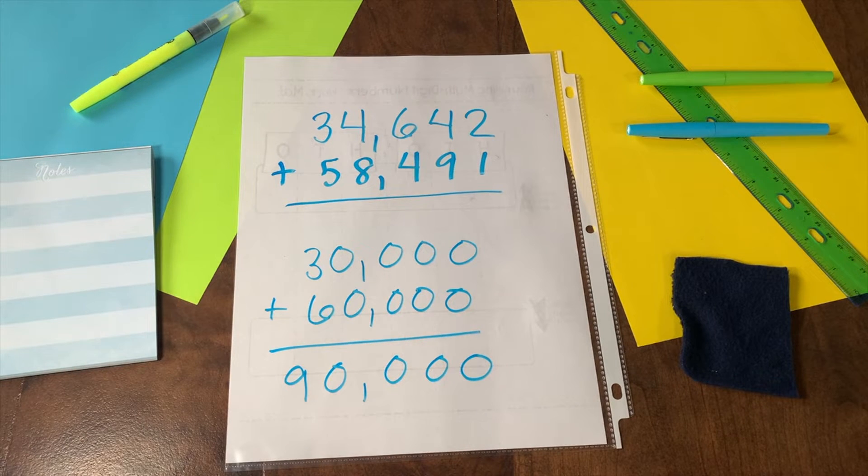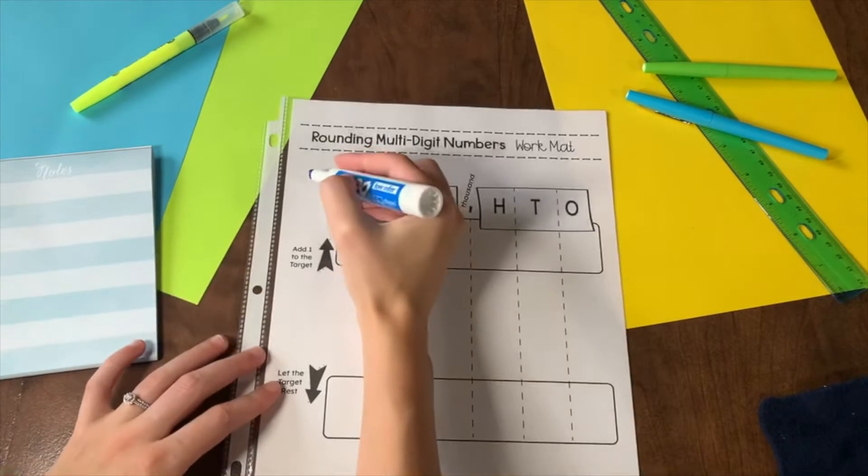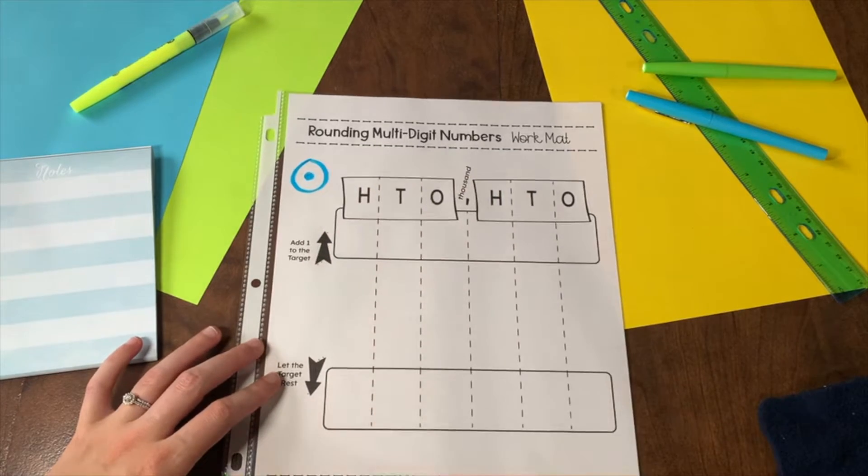Today I'll show you my favorite method for rounding. This method is called the target method. I like to draw my target just like a circle with a dot inside.